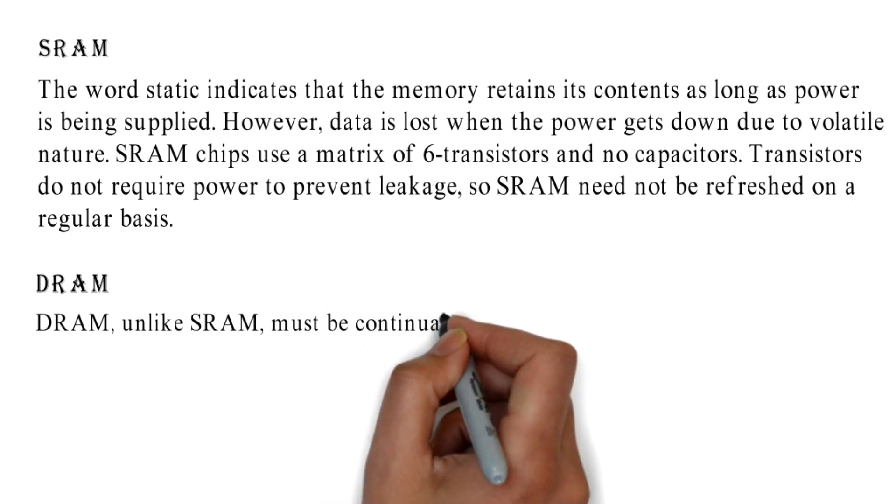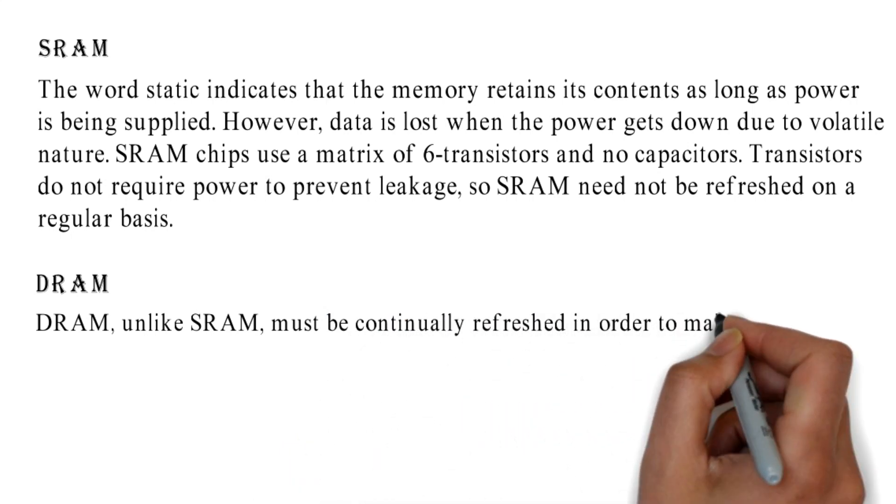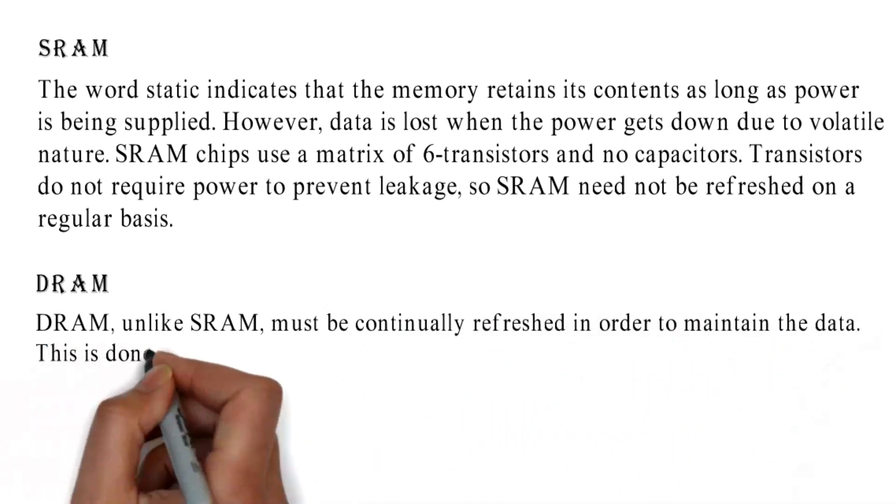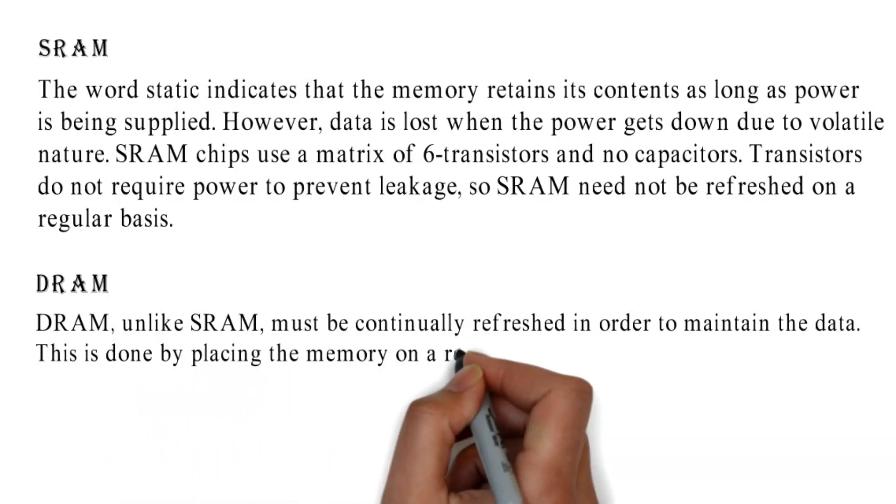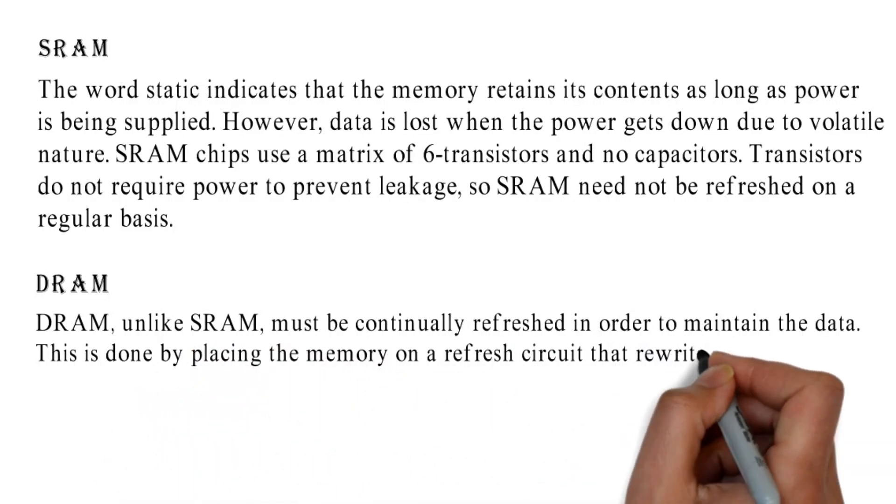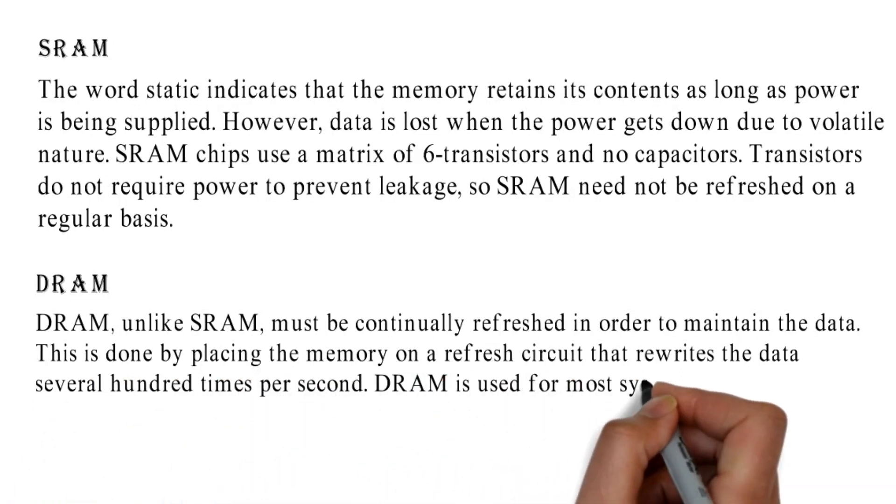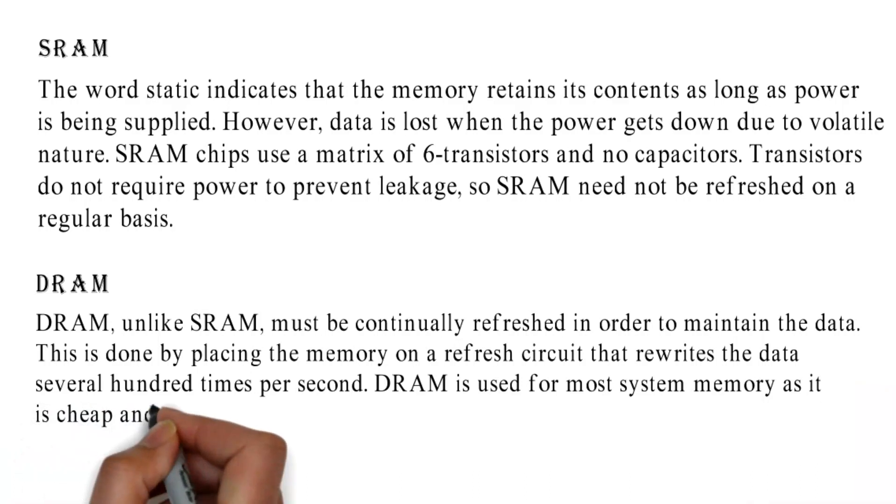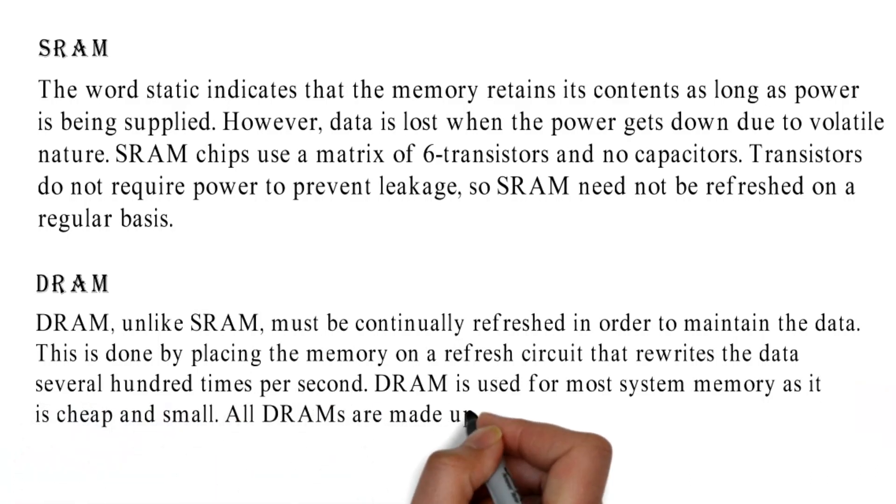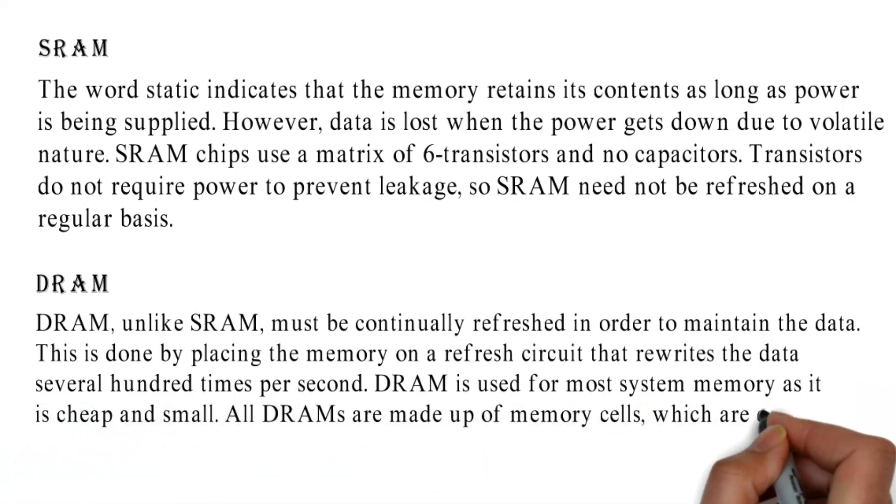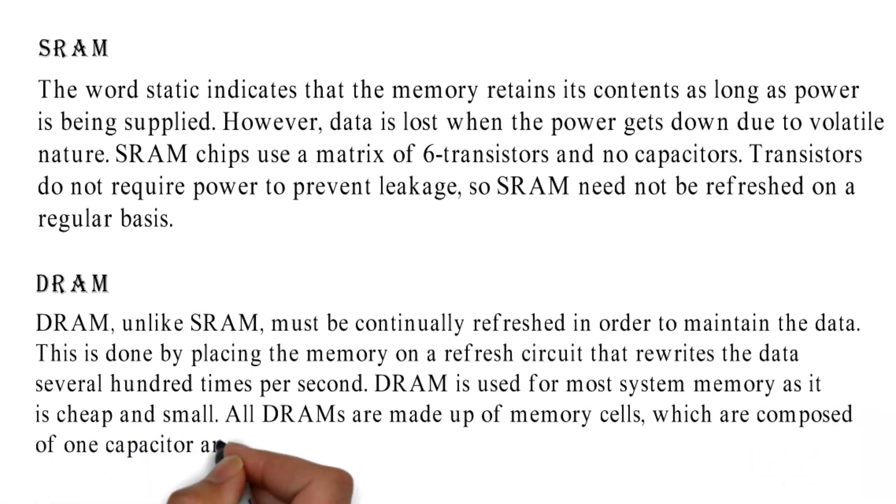DRAM, unlike SRAM, must be continually refreshed in order to maintain the data. This is done by placing the memory on a refresh circuit that rewrites the data several hundred times per second. DRAM is used for most system memory as it is cheap and small. All DRAMs are made up of memory cells, which are composed of one capacitor and one transistor.